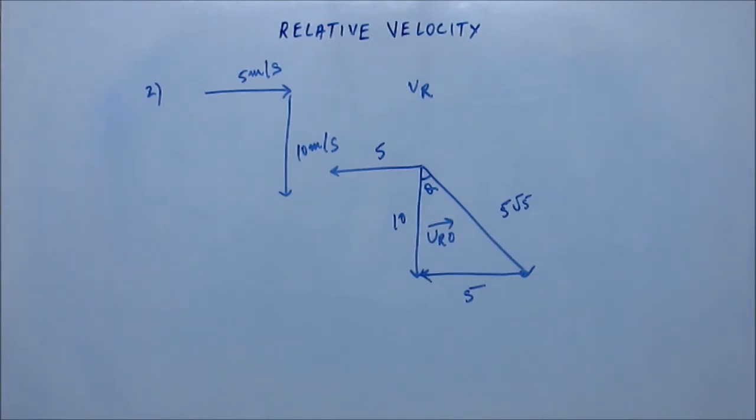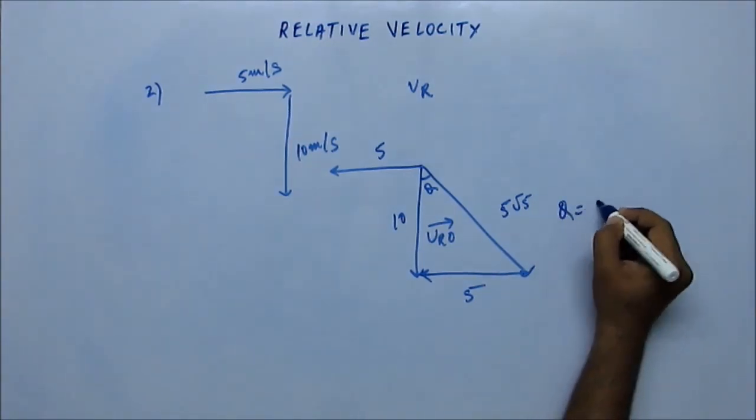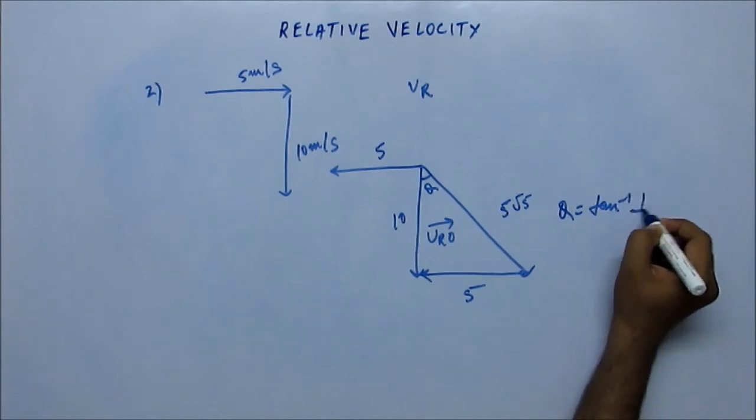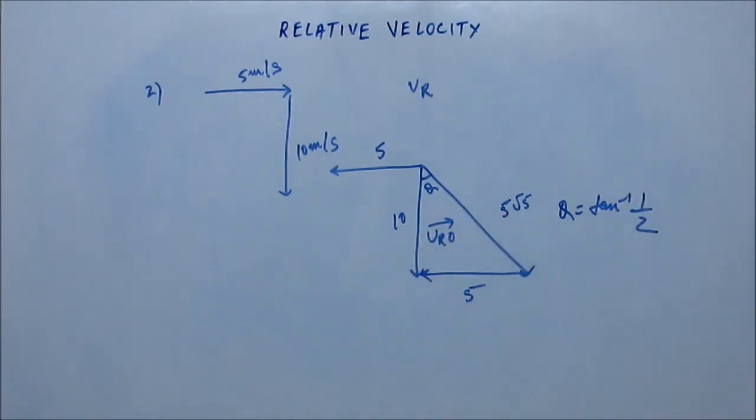Suppose they are also asking what is the angle that the rain velocity vector makes with the vertical. What is theta? Theta would be tan inverse 1 by 2 from this triangle.